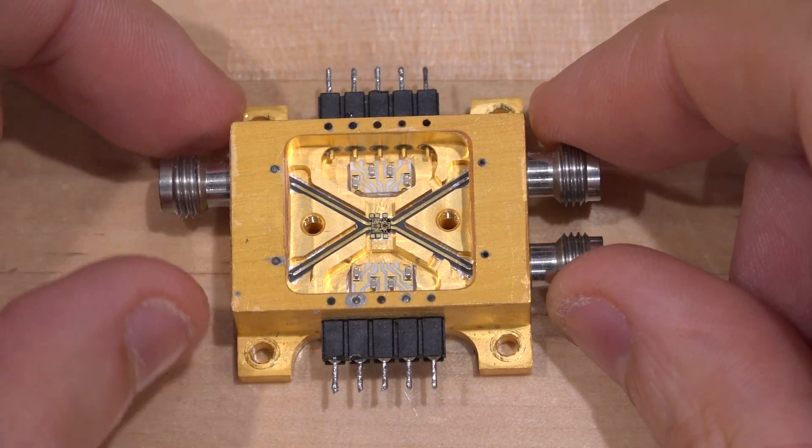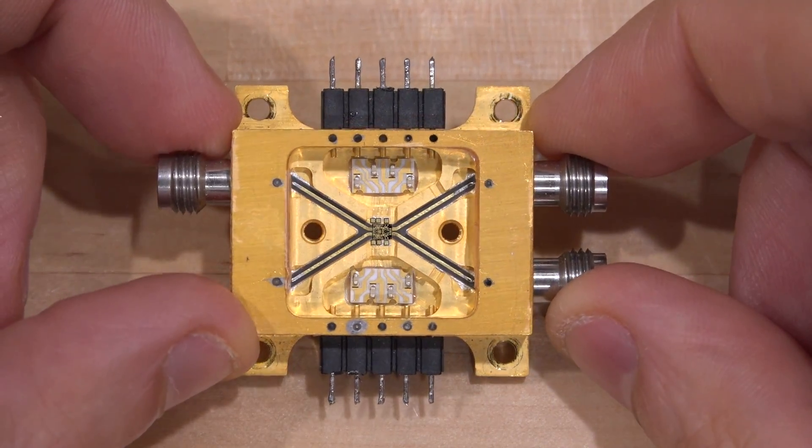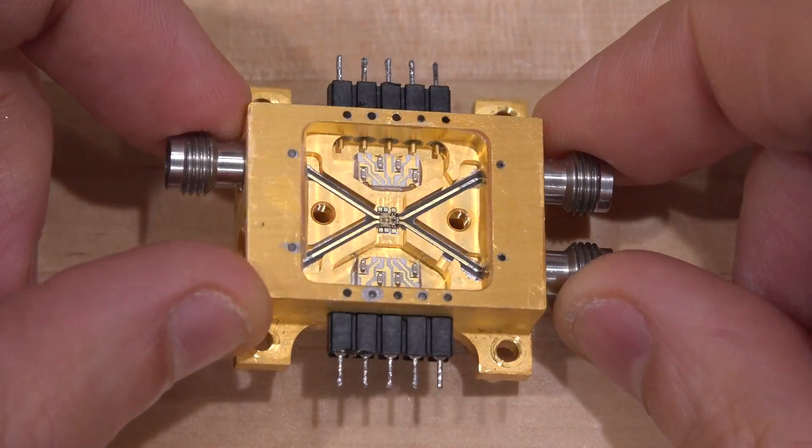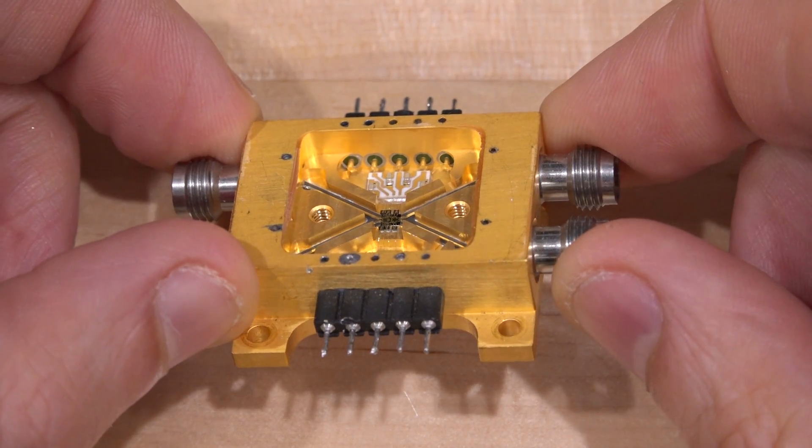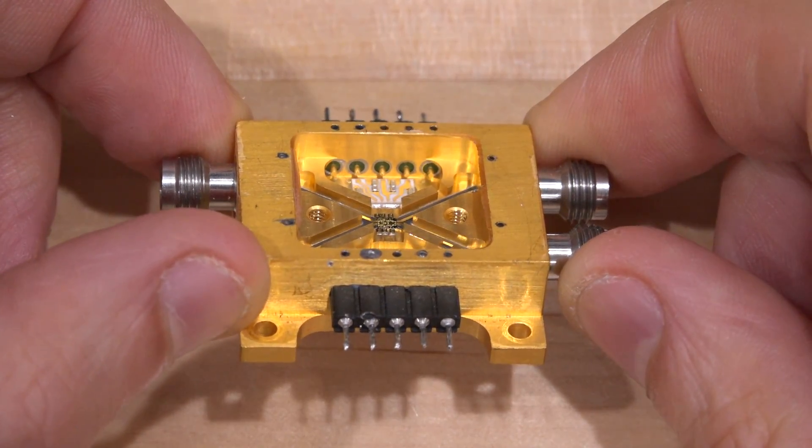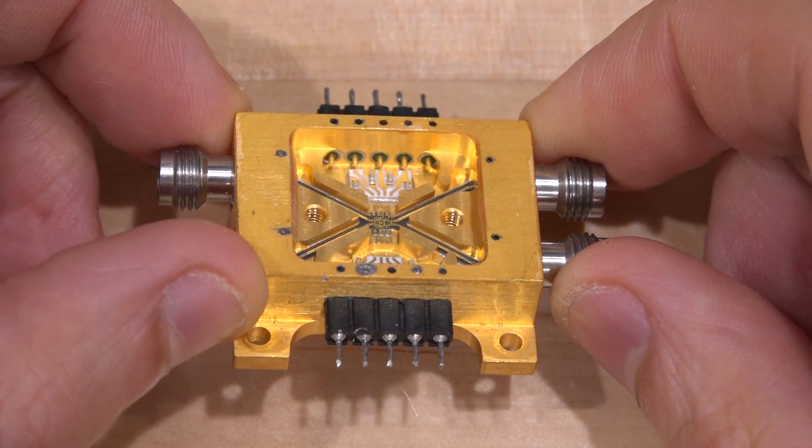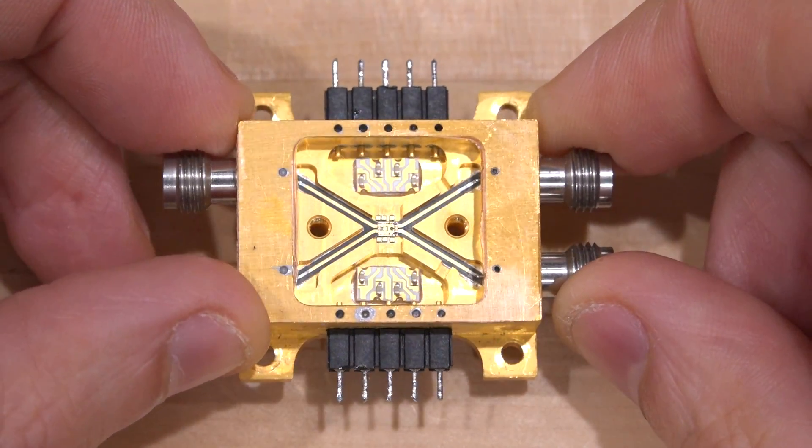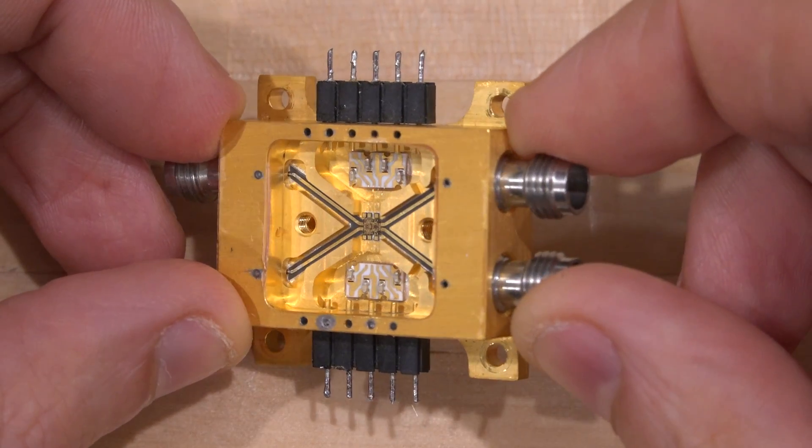Then there's probably wire bonds going to that and that's the same for the input and output. Because it does have a differential input differential output we can have a completely symmetric package as is the case in this situation. We have tall walls around those lines so when you put the cover on they're really well isolated emulating a coaxial line essentially.